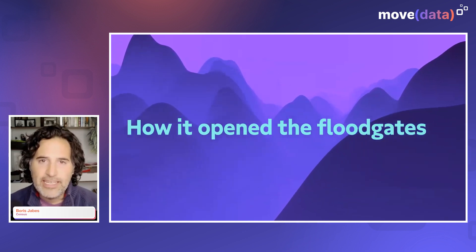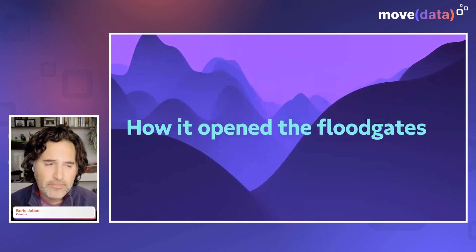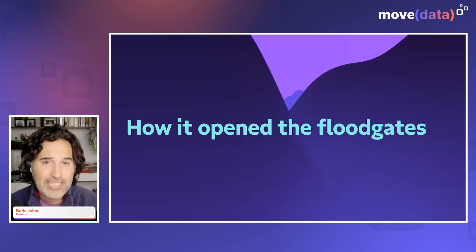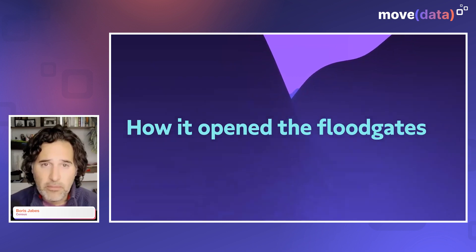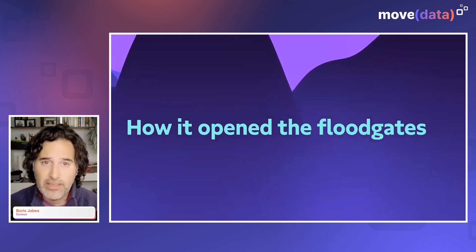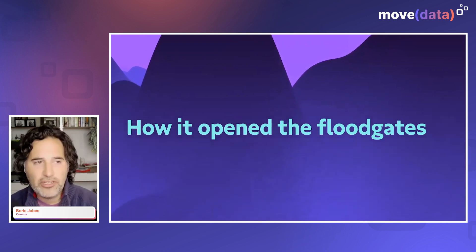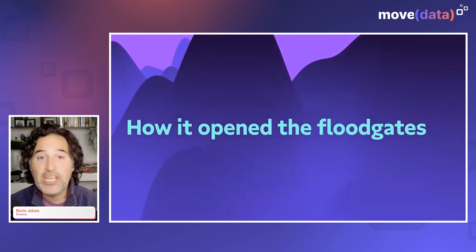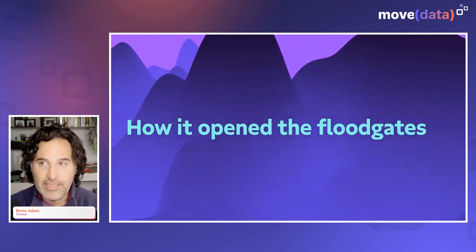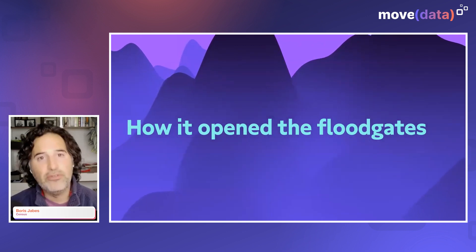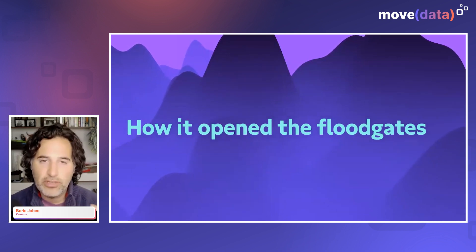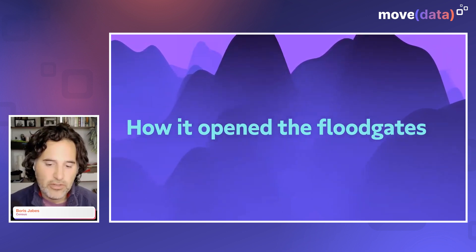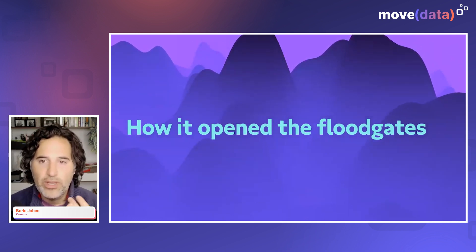Historically, if we're on a data team, the best we could do with data was present it in a really pretty picture or a really pretty spreadsheet. That's good — it allows the whole business to be informed about what's going on — but it doesn't make you really data driven. When you can put data directly into the applications that the business team uses, you can actually create work for them. You can change the way a support ticket is prioritized, create opportunities for your sales team, personalize emails. There are tremendous things you can do once data is put into action. That's the big difference between traditional business intelligence and what you can do with Reverse ETL.